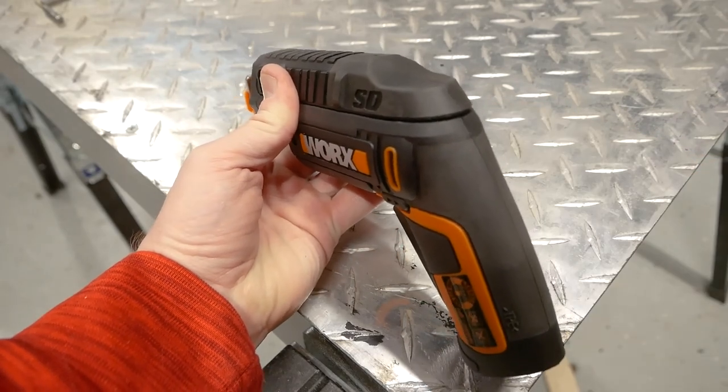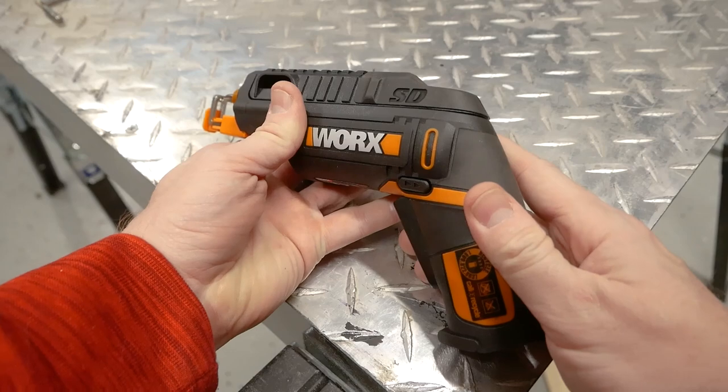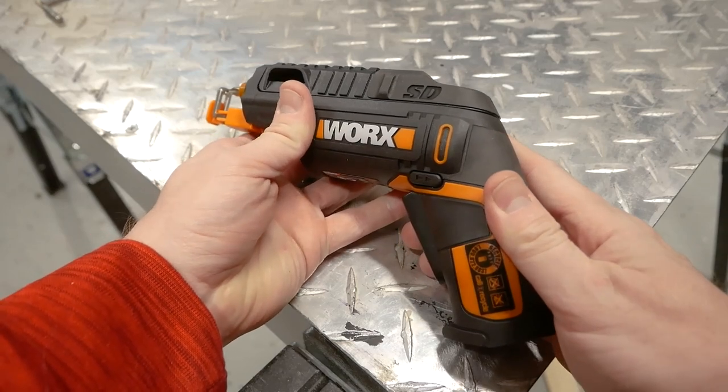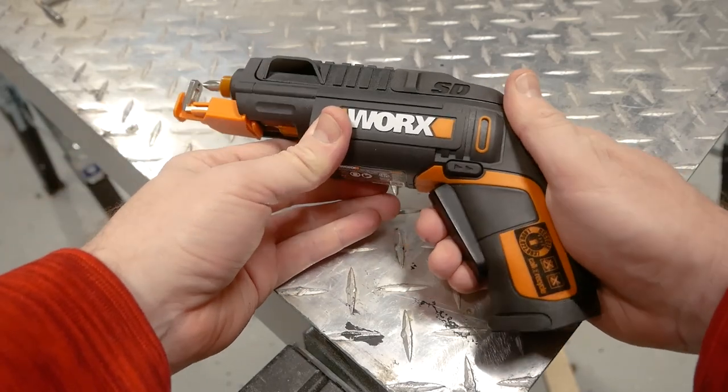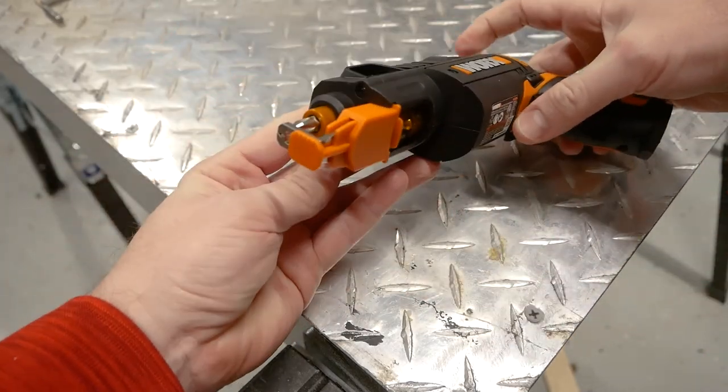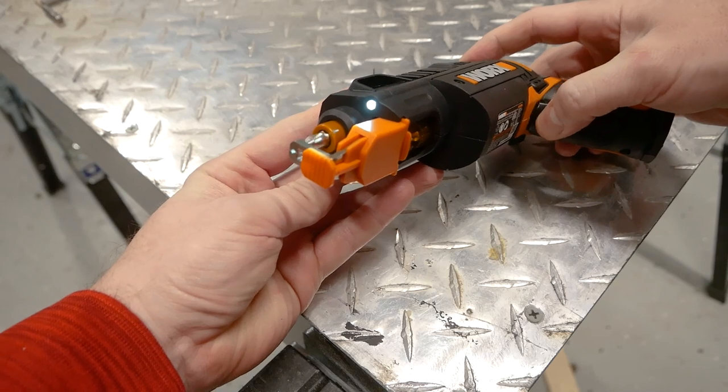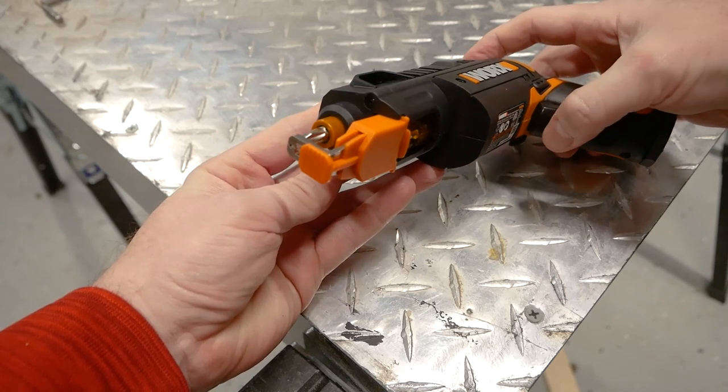One thing it is missing is variable speed. That would have been a nice little addition, but we're not dealing with a real expensive piece of equipment here and they really hit a home run with everything else. Oh, of course, there's a little light on the front that is only on and off as you depress the trigger.